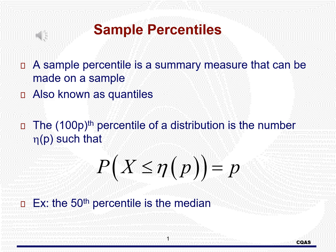In order to discuss quantile tests, we need to first understand what a quantile is. Another word for quantile is a percentile. The pth percentile is a value within a set of numbers that, when ordered from smallest to largest, p% of the data fall below it. For example, the 50th percentile is the median. In this case, we know that 50% of the data fall below the median.